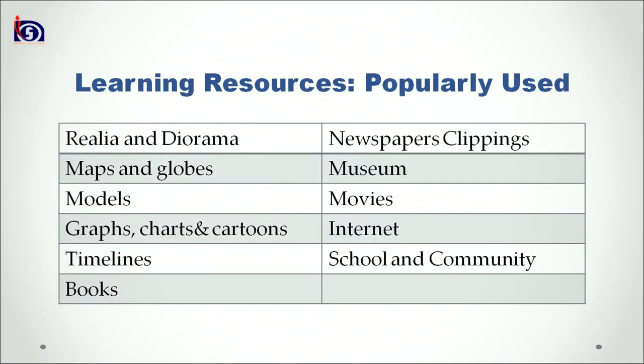The different kinds of learning resources popularly used in social sciences include realia and diorama, maps and globes, models, graphs, charts and cartoons, timelines, books, newspaper clippings, museums, movies, internet, school, and community. This list is not exhaustive, but these are prominently used keeping in mind the content of social sciences at the elementary level.